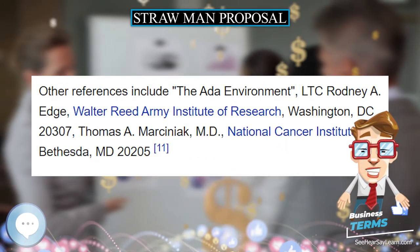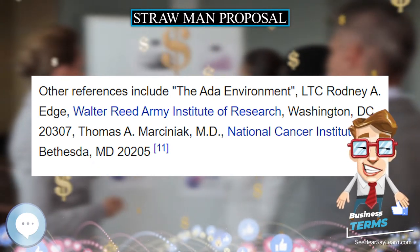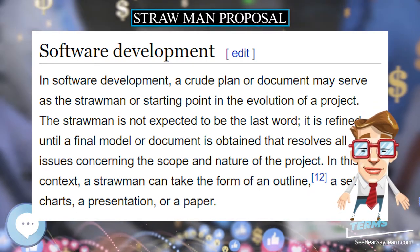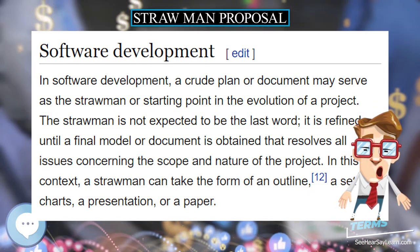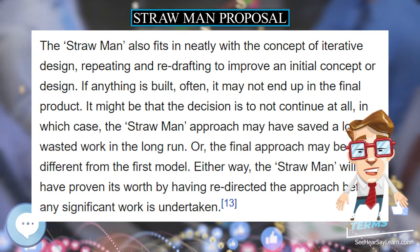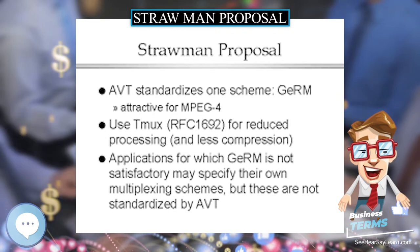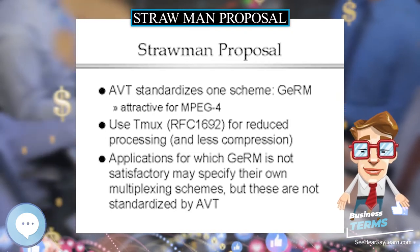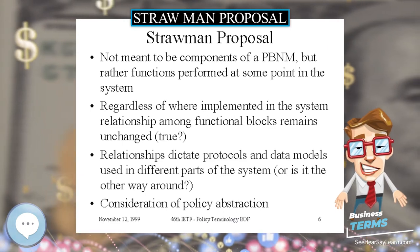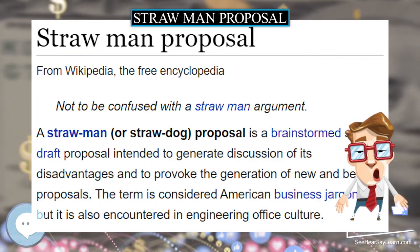In software development, a crude plan or document may serve as the straw man or starting point in the evolution of a project. The straw man is not expected to be the last word; it is refined until a final model or document is obtained that resolves all issues concerning the scope and nature of the project. In this context, a straw man can take the form of an outline, a set of charts, a presentation, or a paper.